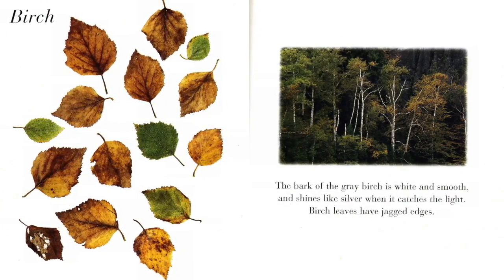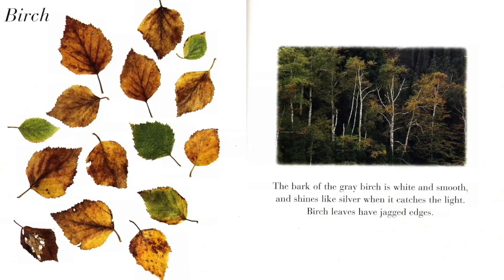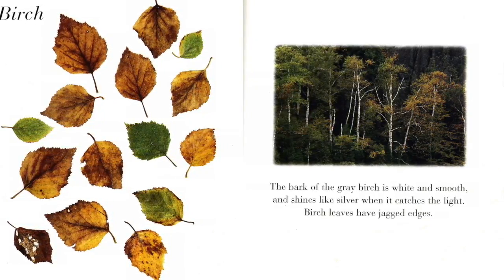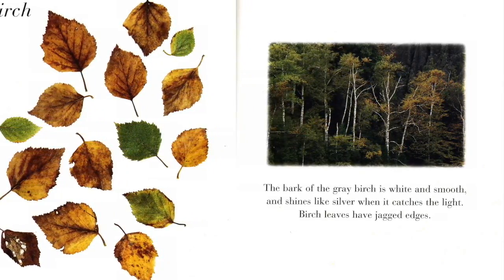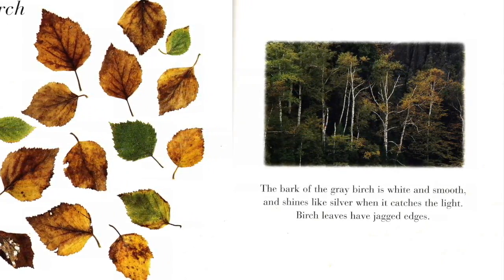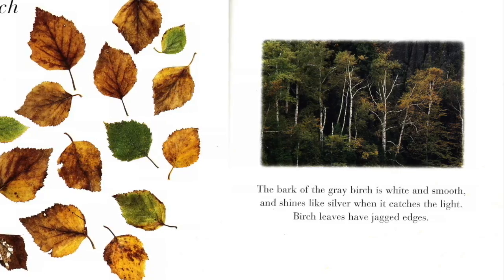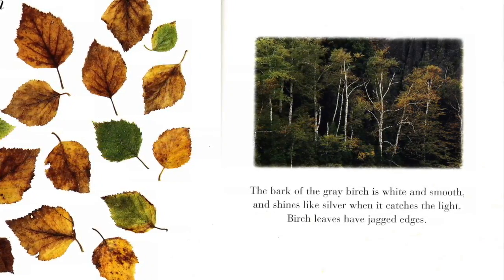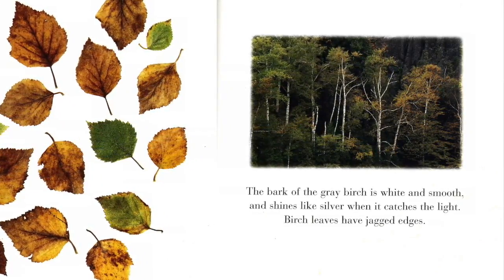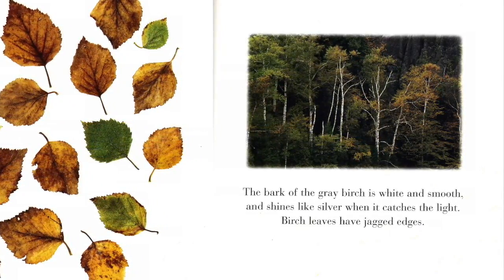Birch. The bark of the gray birch is white and smooth and shines like silver when it catches the light. Birch leaves have jagged edges.